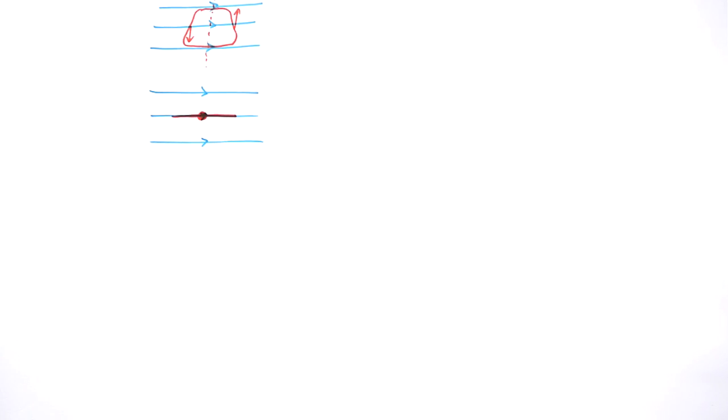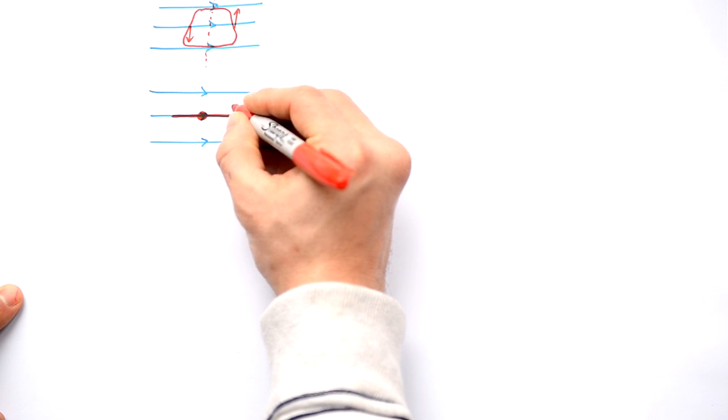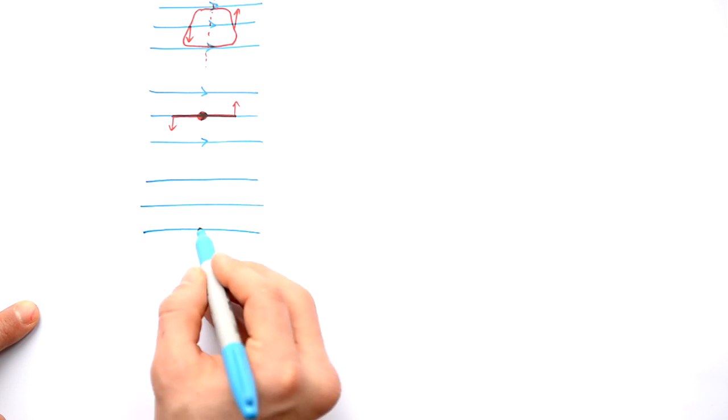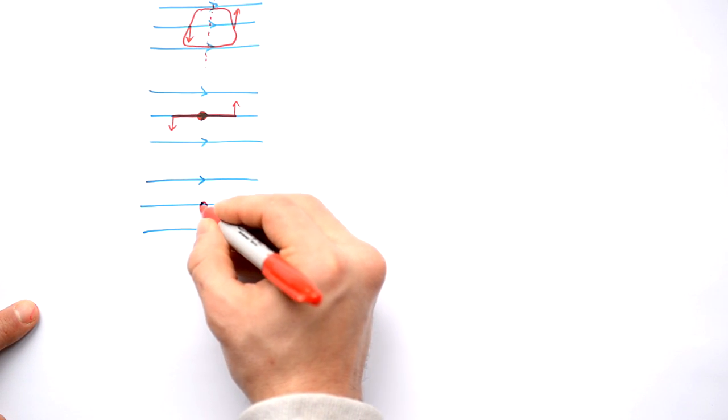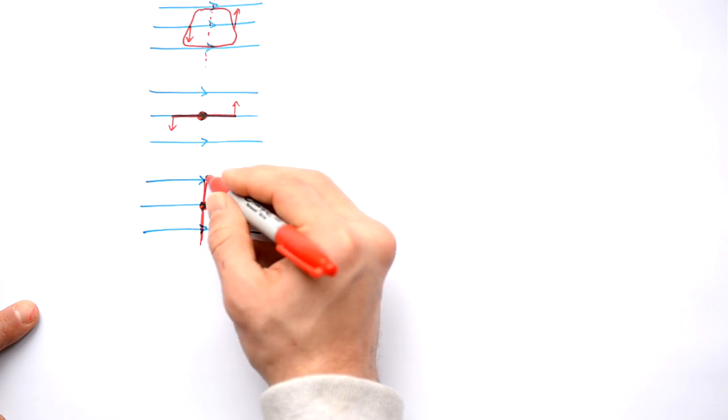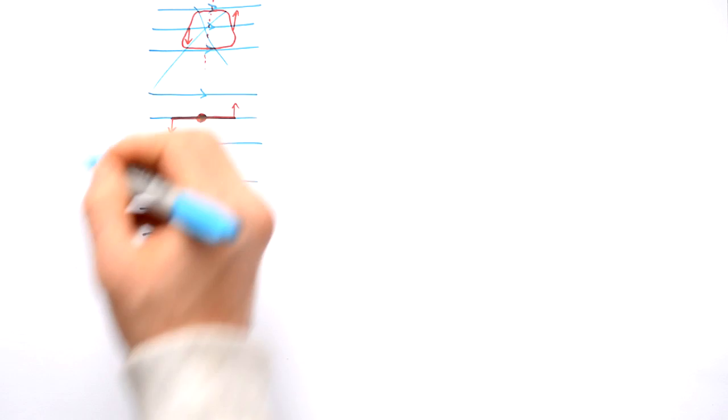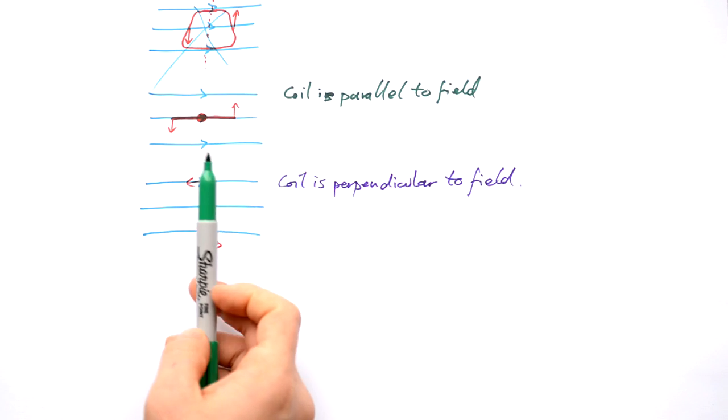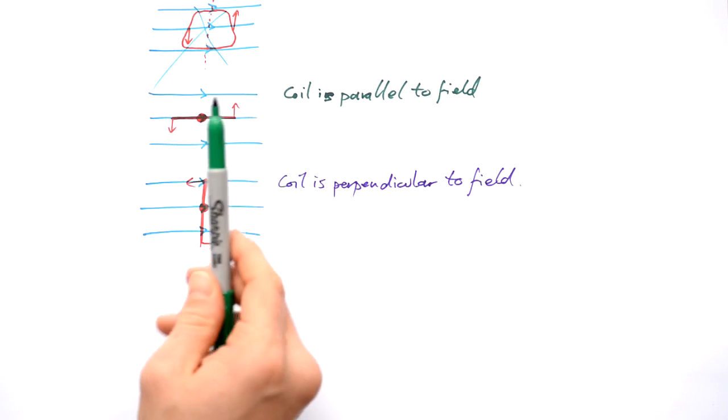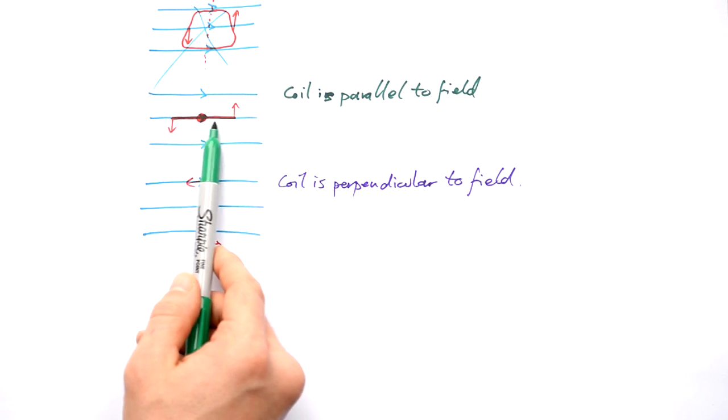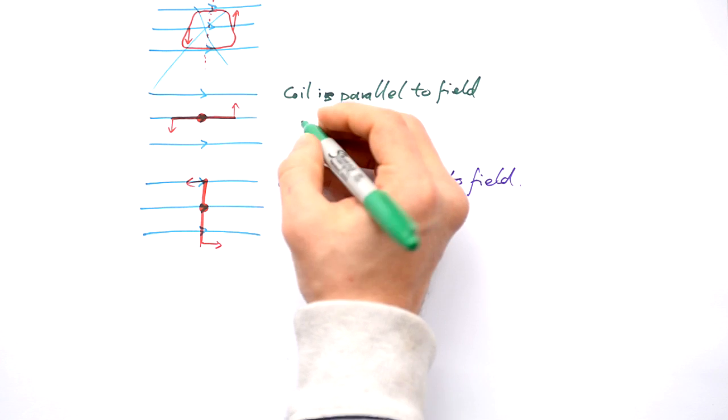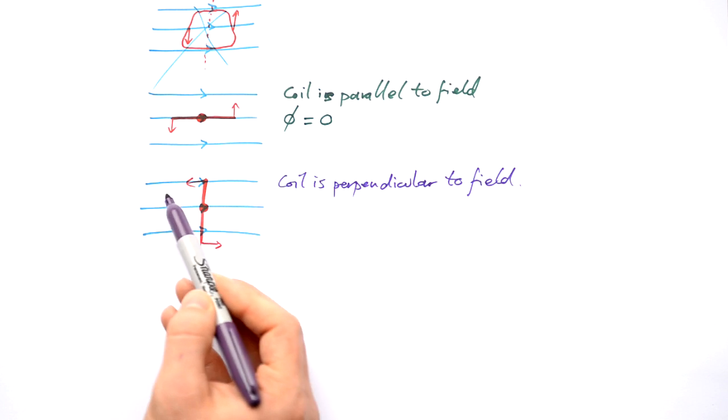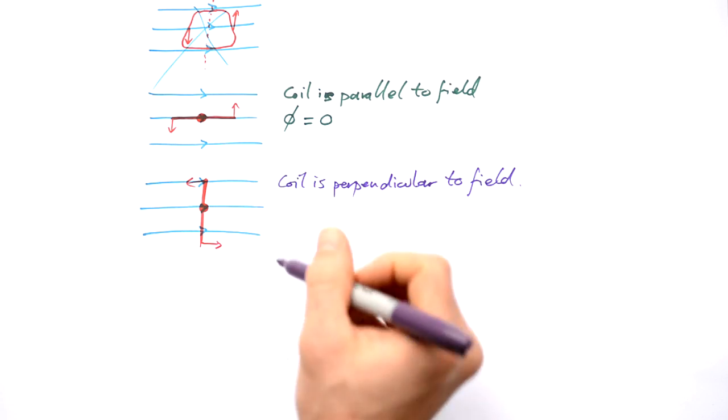So I'm going to draw it in 2D instead. There's my field lines and here is my coil of wire. We're looking end on. I'm moving this side up and this side down as we're turning it. At some point it's also going to be perpendicular to the field lines. Here the coil is parallel to the field and here the coil is perpendicular to the field. Now how much flux is filling up the coil when it's parallel to the field? We can see that field lines just go along the coil there, so actually the flux is zero.